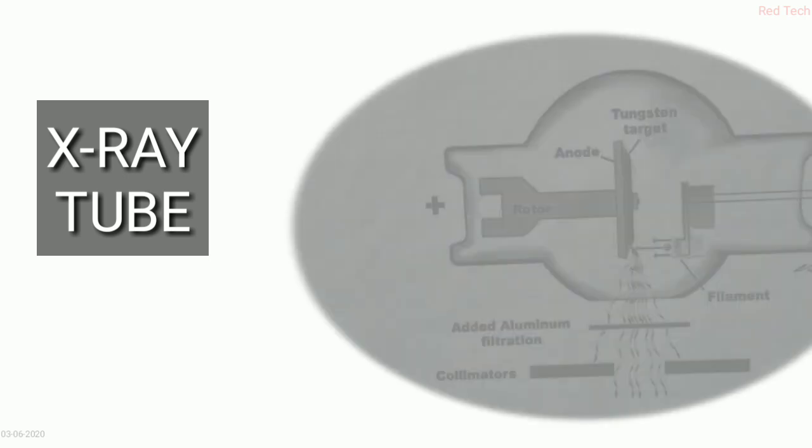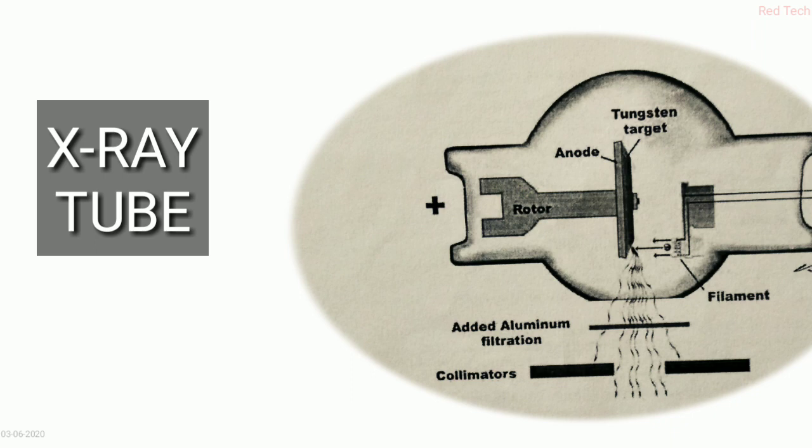So let's begin. Here you can see the diagram. In this video I will describe and discuss with the help of this diagram only. Here you can see the rotor and the anode. Jo hamara anode hota hai woh hamara do